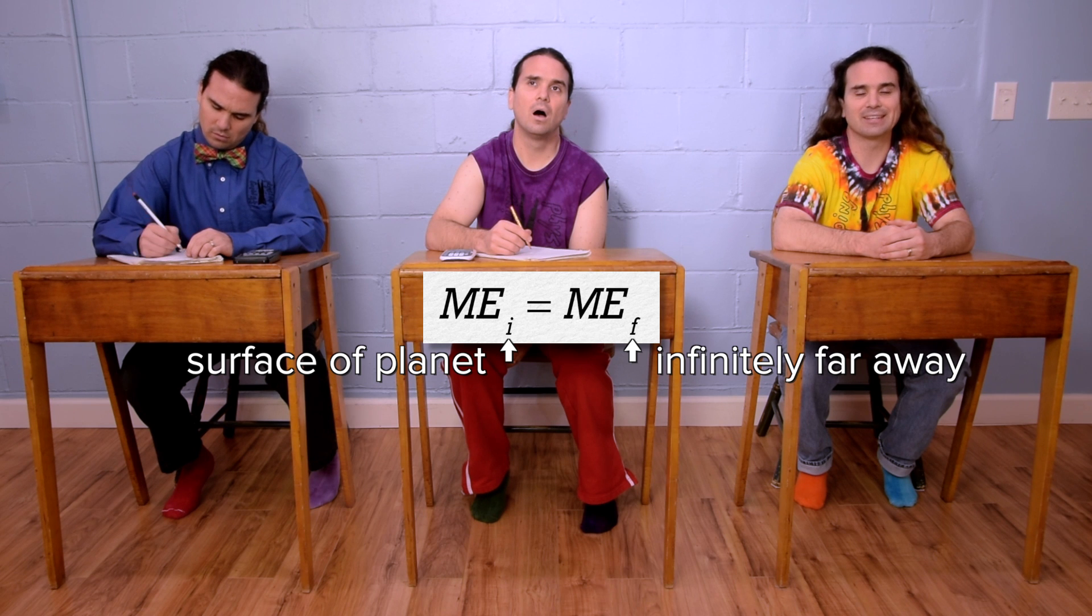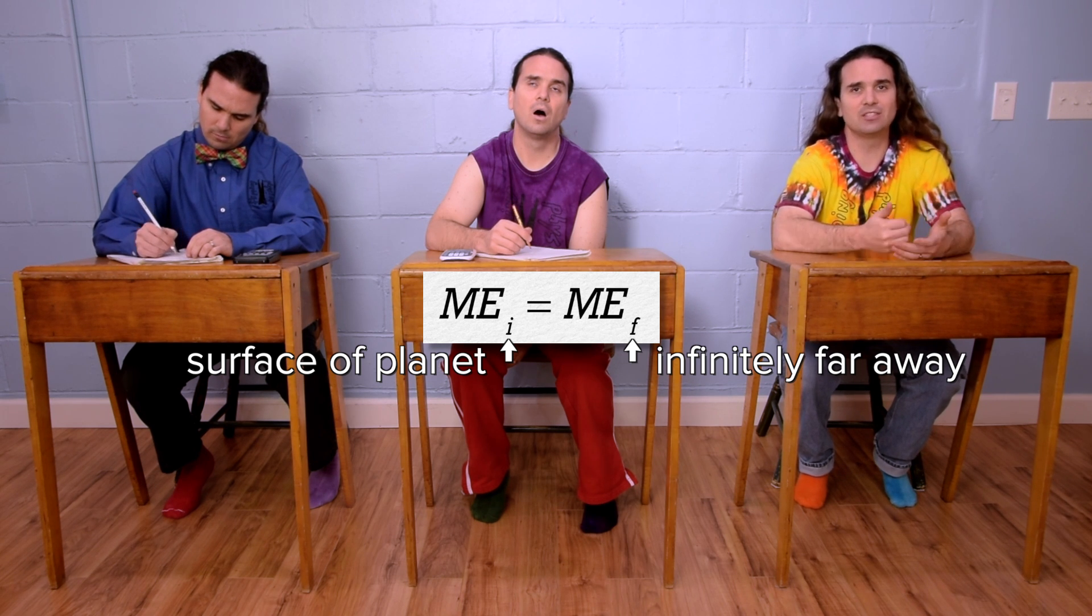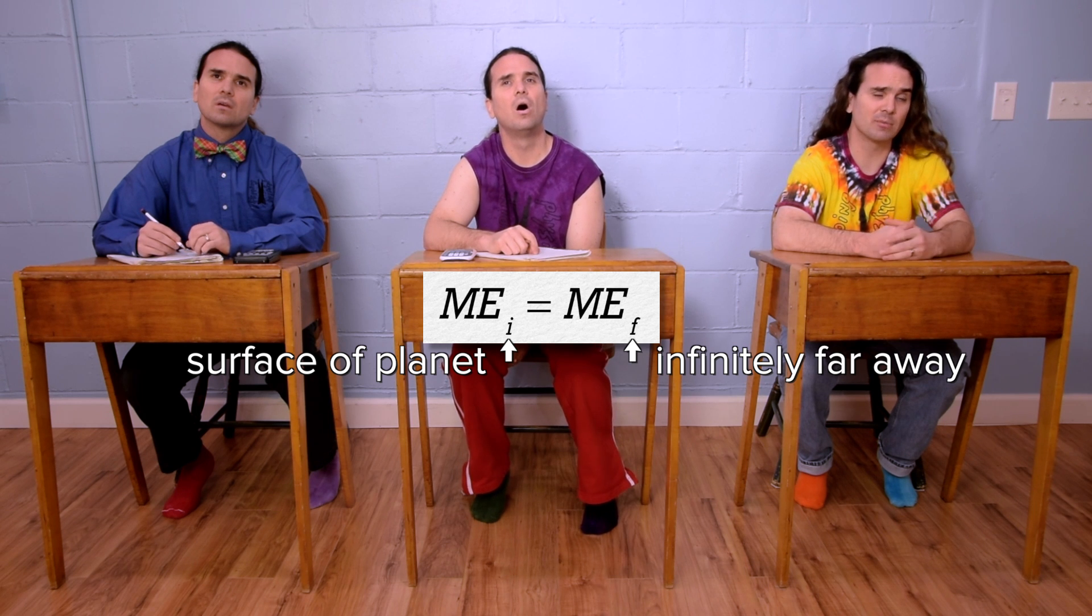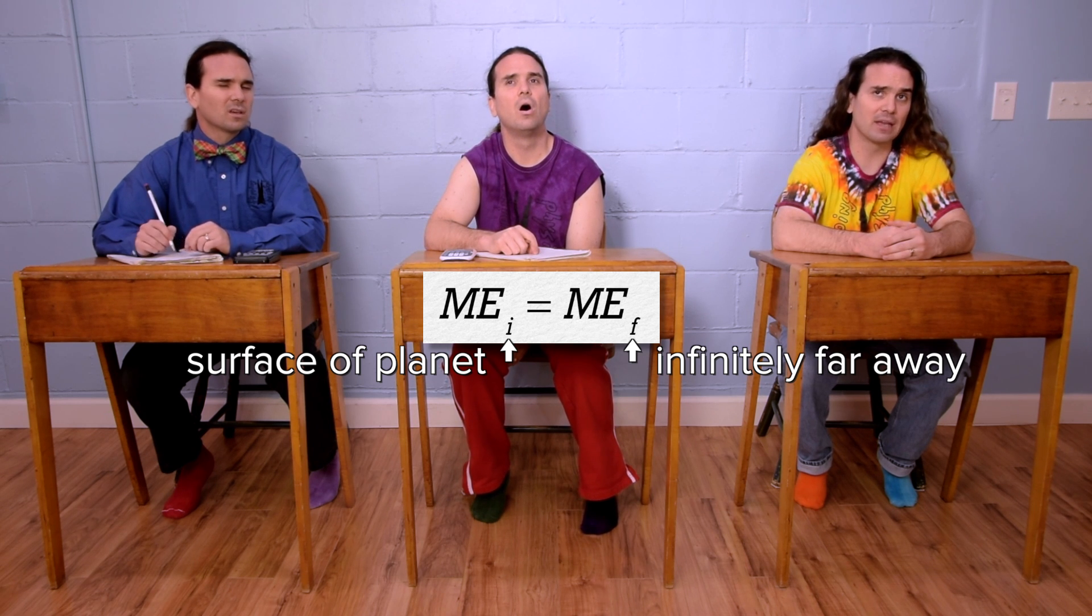For the zero line, we need to use universal gravitational potential energy for this problem. So, the zero line is predetermined and is infinitely far away from the planet.